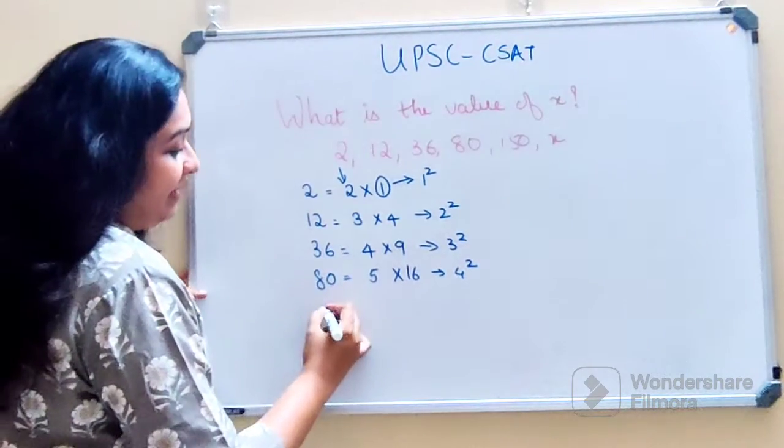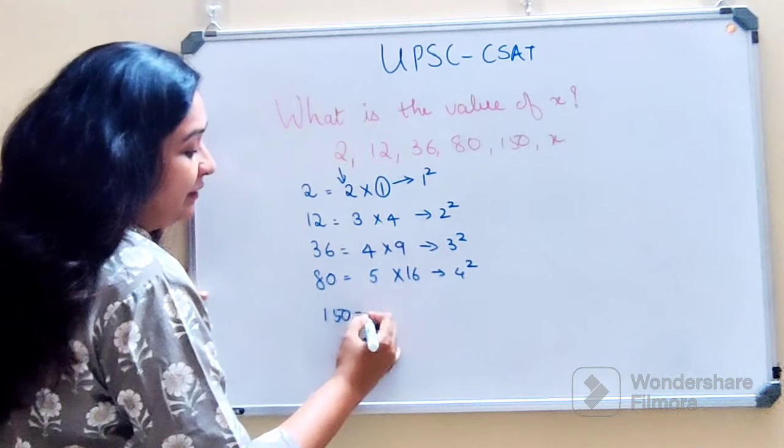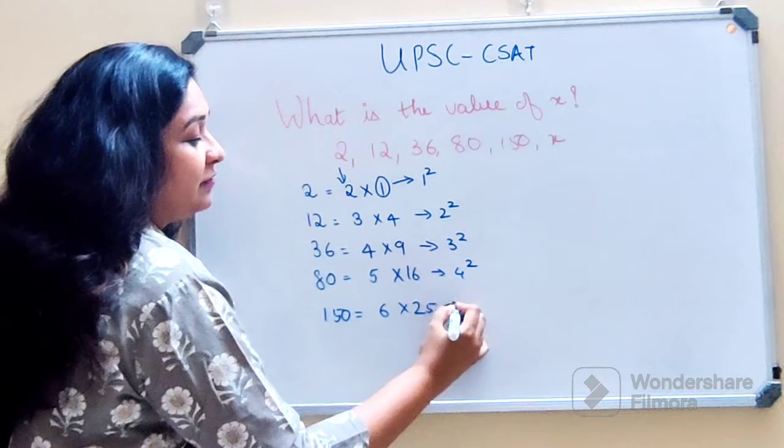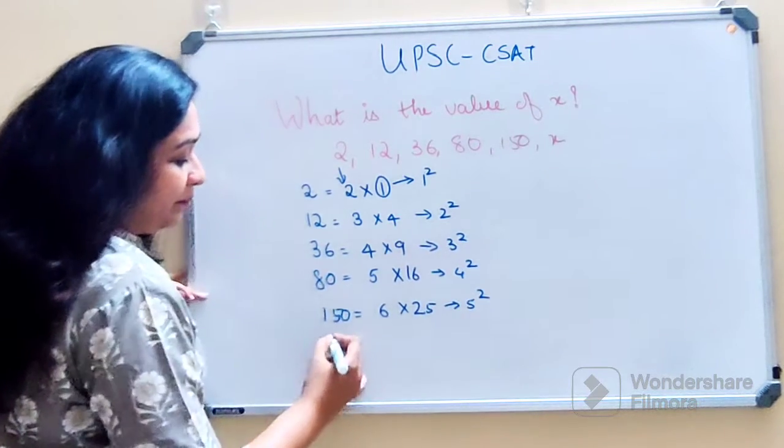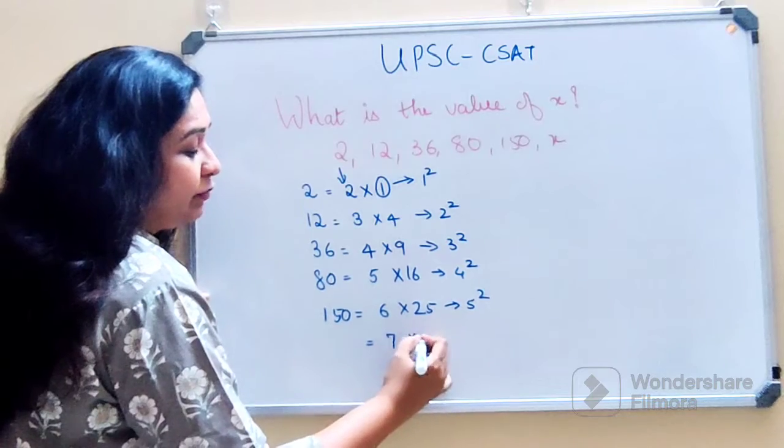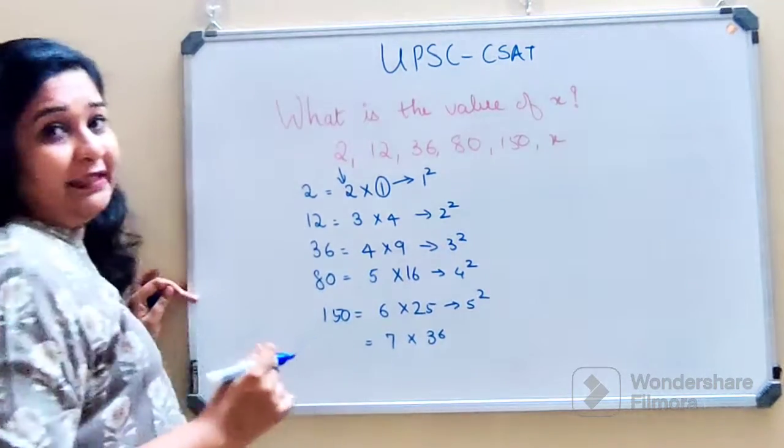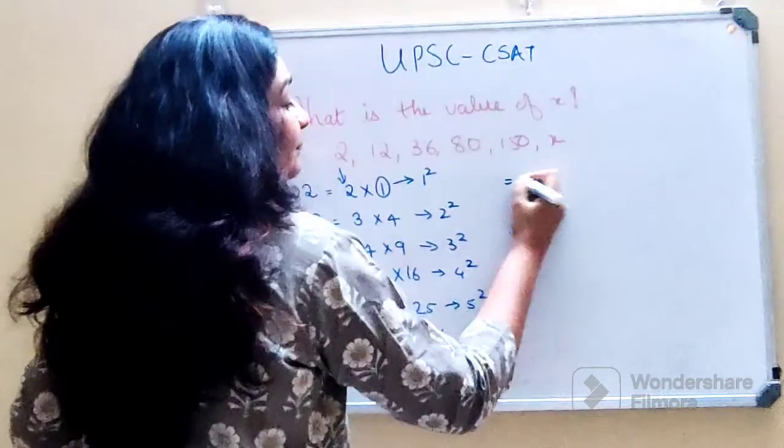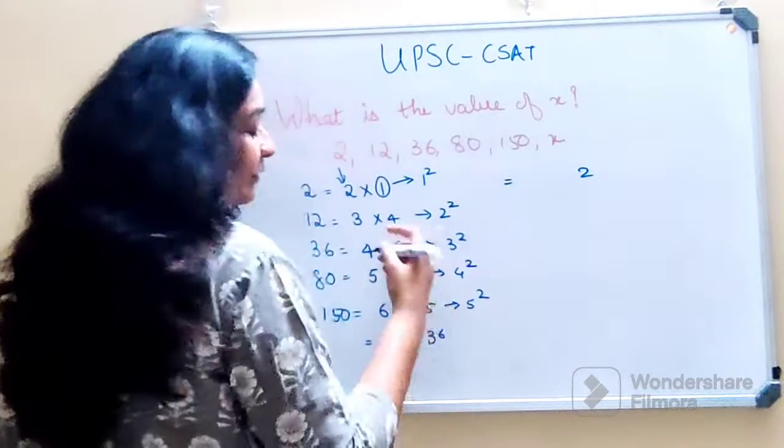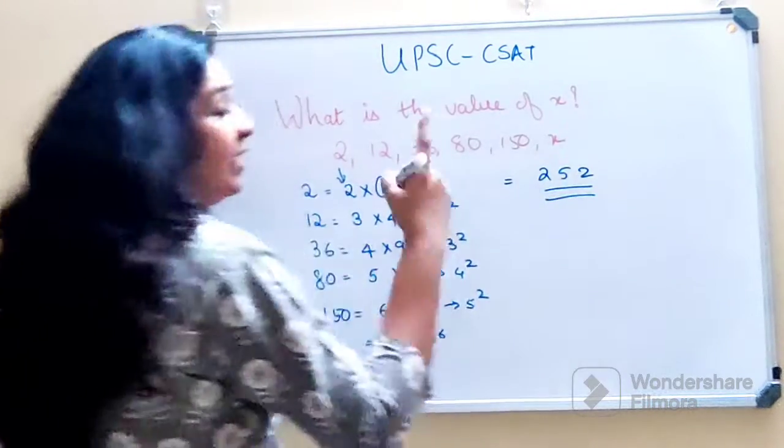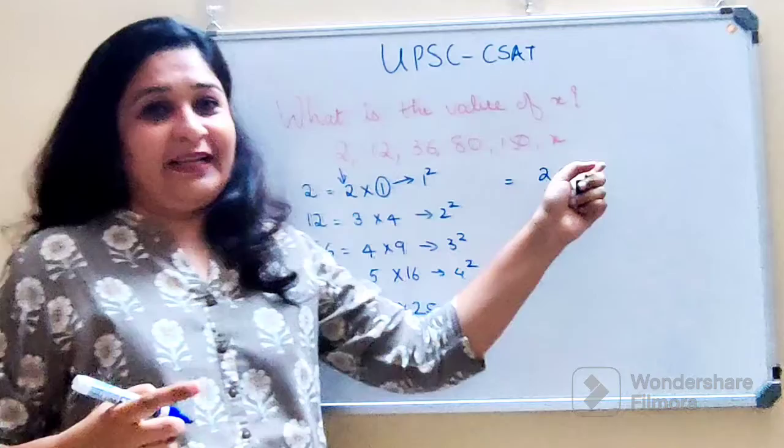So then again we have 150. So that will be nothing but 6 into 25. This is 5 square. So next will be 7 into 36. So that should be the answer for that one. So that is nothing but 12 for carry and 252. That is your answer for the value of x.